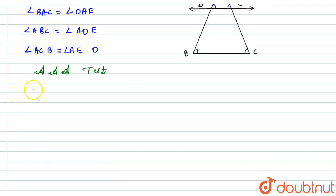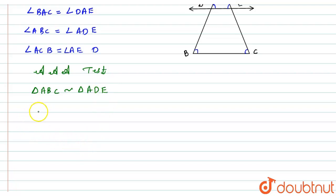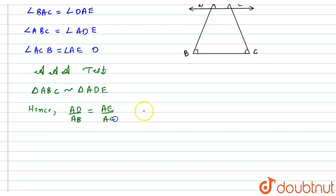Hence, by AAA similarity test, it is proved that triangle ABC is similar to triangle ADE. Now we know that if two triangles are similar, their sides are in proportion. Hence, AD upon AB equals AE divided by AC. Let this be equation number one.